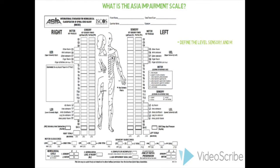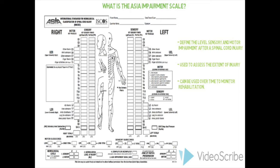The ASIA Impairment Scale is a scoring system used to define the level of sensory and motor impairment after a spinal cord injury according to accepted international standards. It is used to assess the extent of injury and can be used over time to monitor rehabilitation. Ideally, it should be performed on a patient within 72 hours of injury. The scale was developed by the American Spinal Injury Association and provides a common language for healthcare professionals, patients, and families to discuss spinal cord injuries.